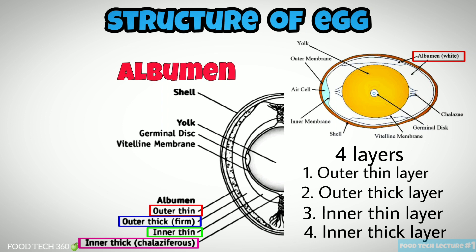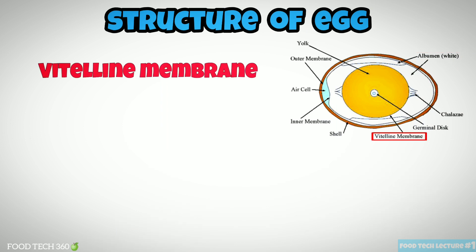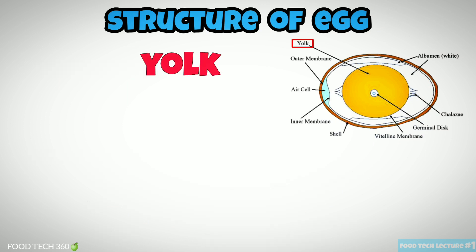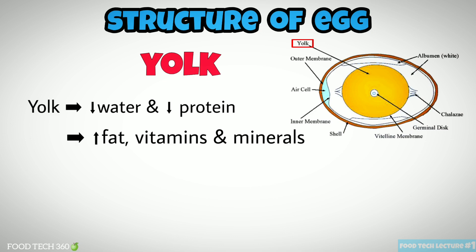The inner thick albumin layer is also called the chalaziferous layer. Albumin contributes 60% of total egg weight. Then the vitelline membrane — the clear seal which holds the egg yolk.